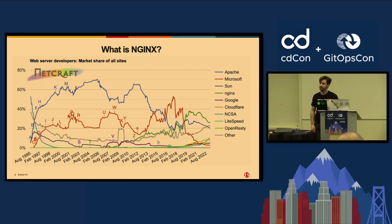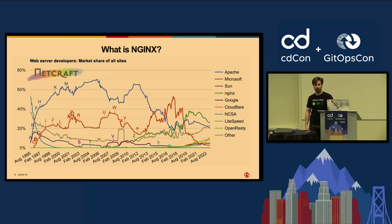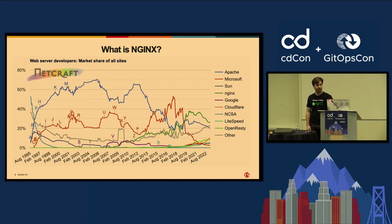Nginx started as a web server in 2004. The main goal back when it was first created — the problem it was trying to solve — was the world-famous C10k problem. The cliff notes version: no web server before Nginx could handle 10,000 concurrent connections. Then Nginx came along and was able to handle them. There's a little more nuance behind it, but I'm not going to delve into that right now.